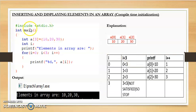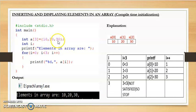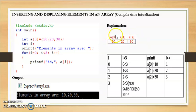First we write the header file, that is hash include stdio.h. The program will start from the main function. Here we have an integer array, the name of the array is 'a', the maximum size of the array is 3, and we have initialized 3 values — 10, 20, and 30 — in the curly brackets. So 10 will be placed at the 0th position, 20 at the first position, and 30 at the second position, since array values start from 0.